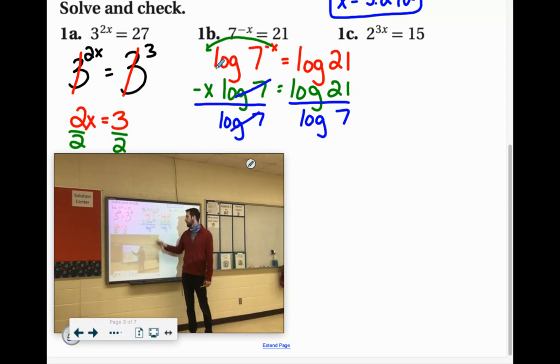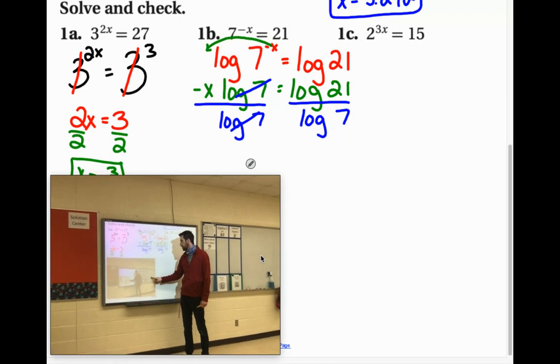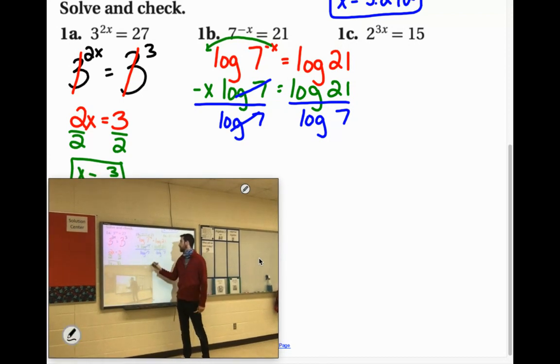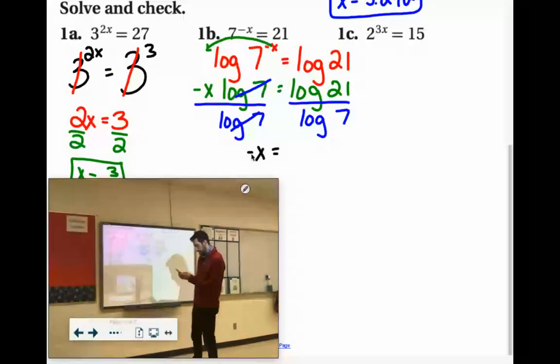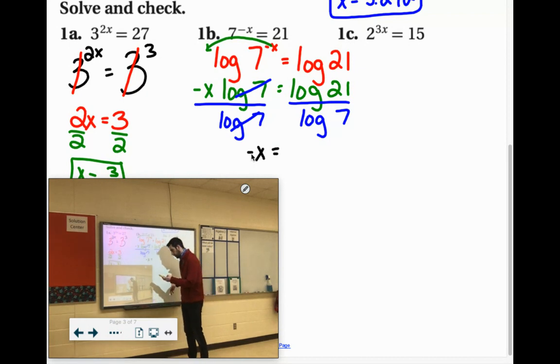These cancel out. So we're left with negative x equals, let's see what log 21 divided by log 7 is. 1.5, okay, here we go. So 1.565, if we round it, it goes on beyond that.